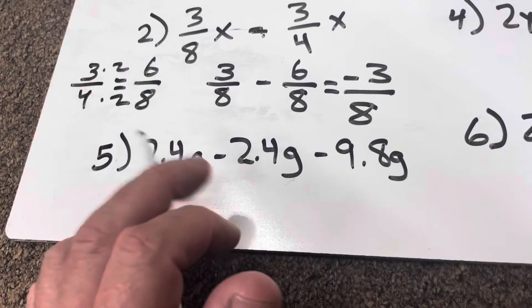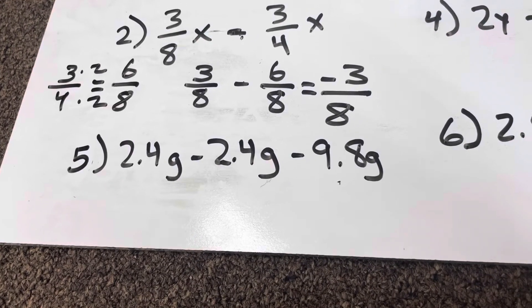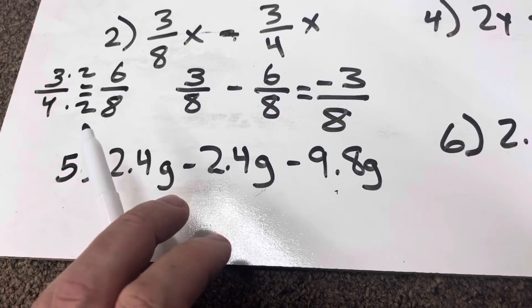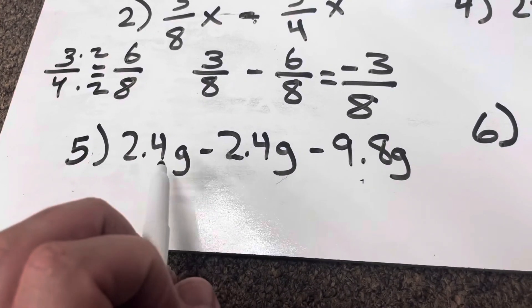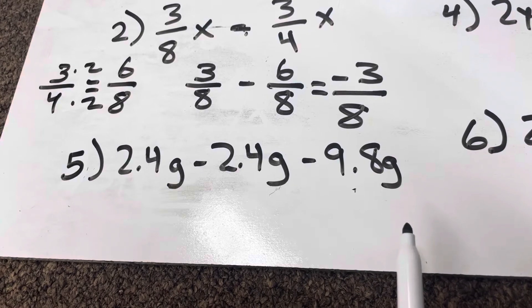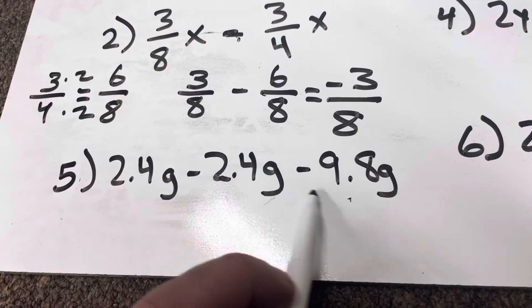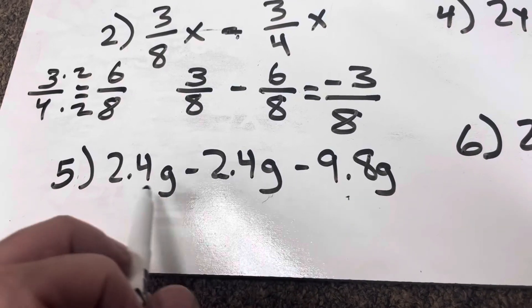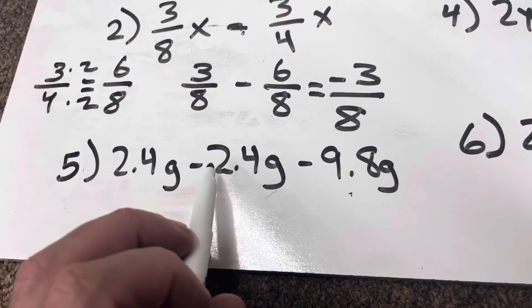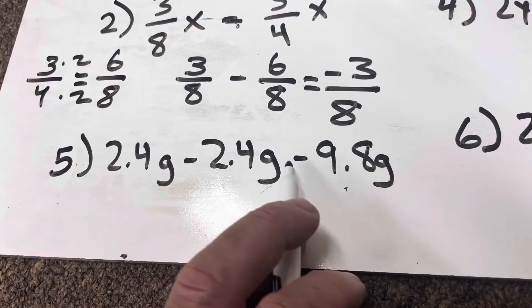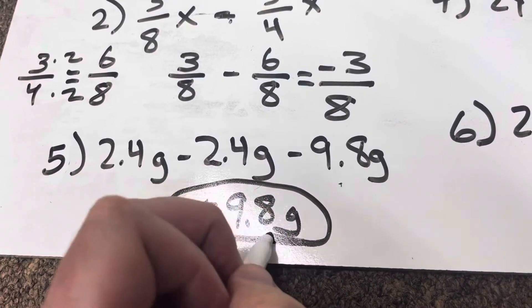Let's go to the next one. 2.4g minus 2.4g minus 9.8g. Sometimes you might have more than two like terms together. They can have more than two as long as they have the same variable and the same exponent. Here's an example where they all have g as a variable, no exponent. So I just combine. There's no parentheses. There's no exponents to clear. There's no multiplication and division. So I'm just going left to right. 2.4g minus 2.4g. That's going to be zero. So then I have nothing minus 9.8g. I end up with a negative 9.8g.